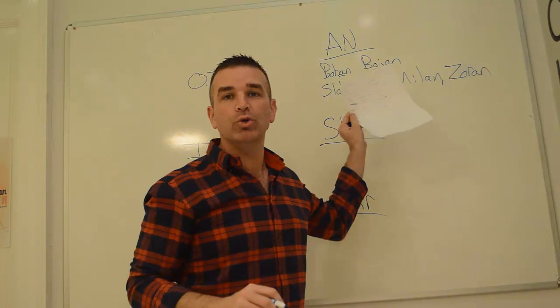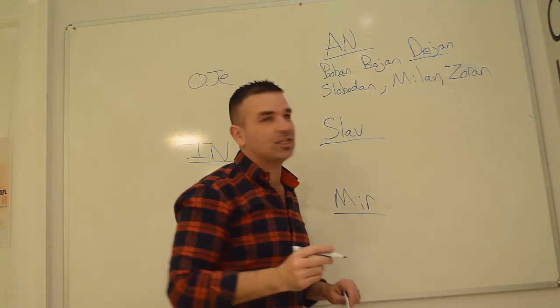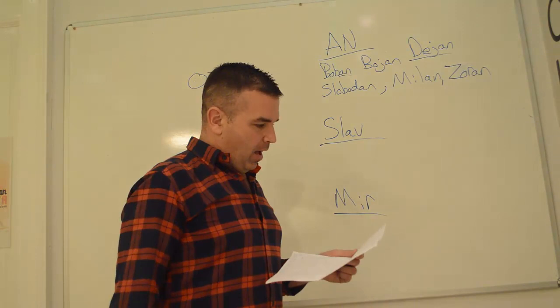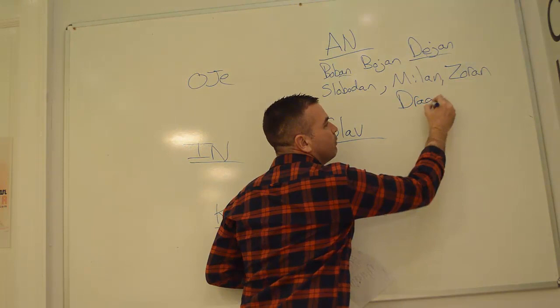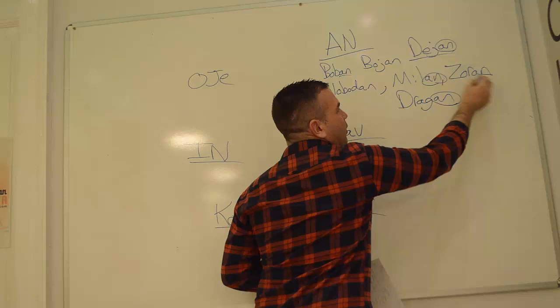This is another funny one for foreigners from the USA when you see this - looks like Dragon, but it's Dragan. This is a very common name. So you notice this AN ending. These are very common Serbian names. Next one, we've got Slav.